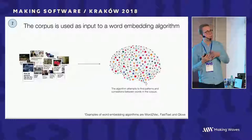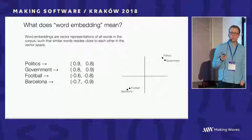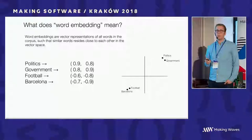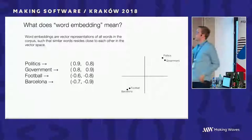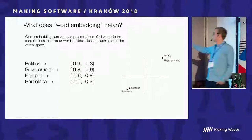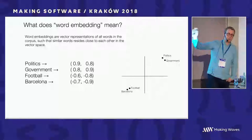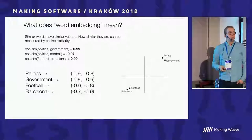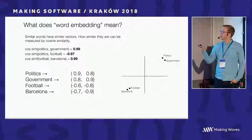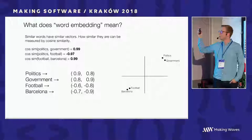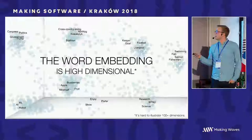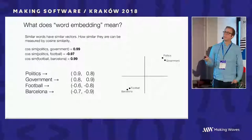A word embedding algorithm attempts to find patterns and correlations between words. Words that are often used together in a sentence — close to each other in documents — will be considered similar and placed close to each other in a vector space. For example, with four words — politics, government, football, Barcelona — the output of the word embedding algorithm places politics and government close to each other, and football and Barcelona close to each other. We can then use cosine similarity to measure which words are similar: cosine similarity between politics and government gives a high value, while politics and football gives an extremely low value.